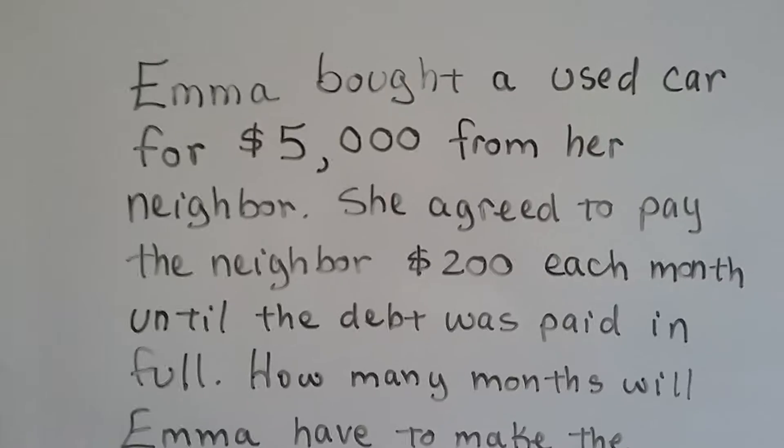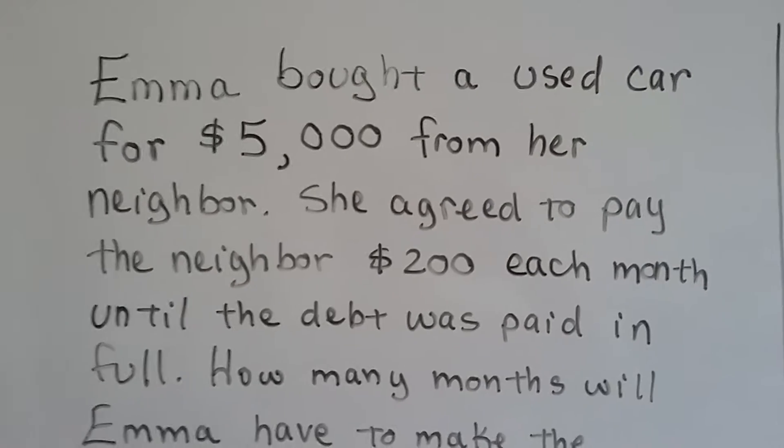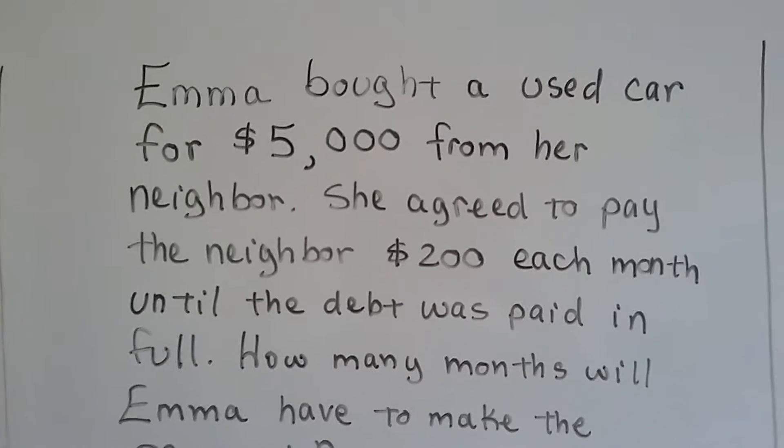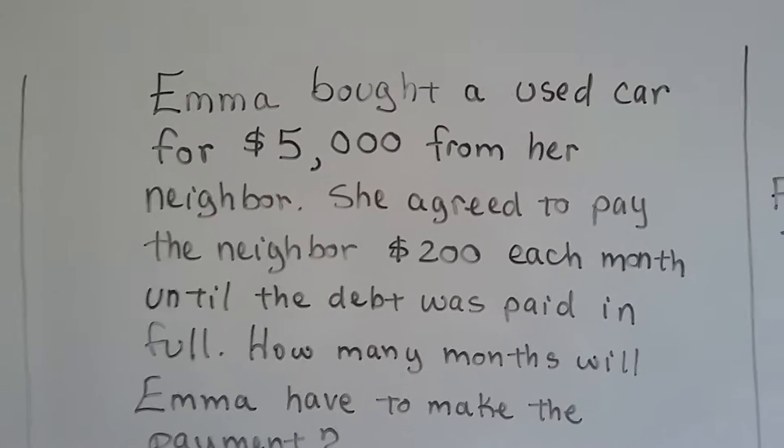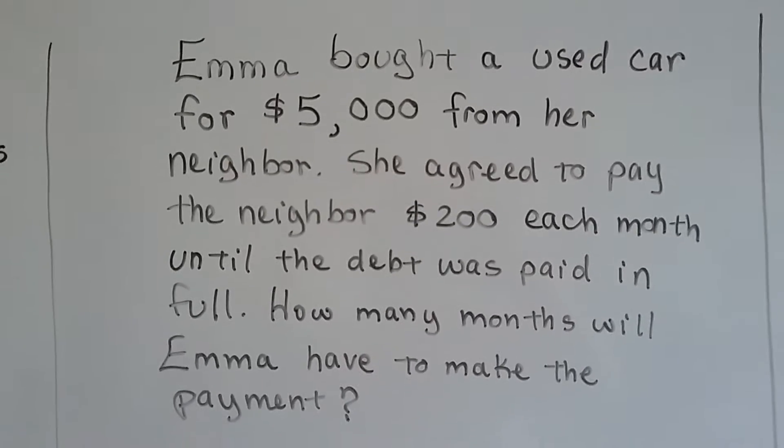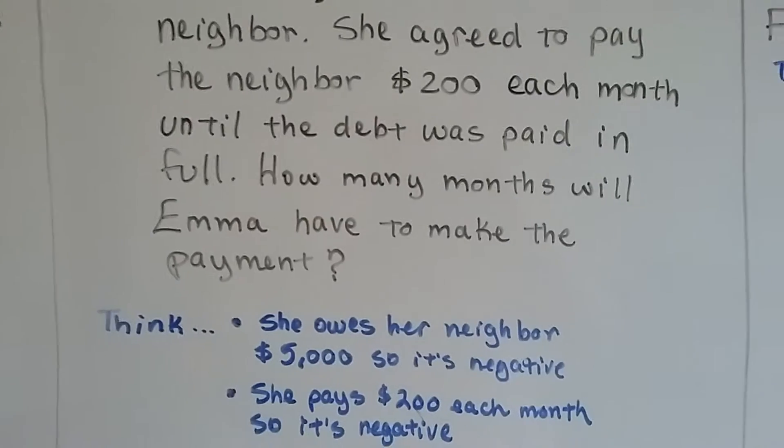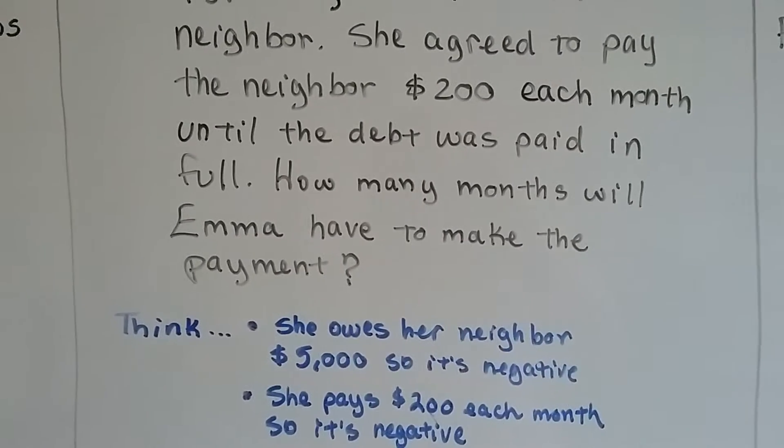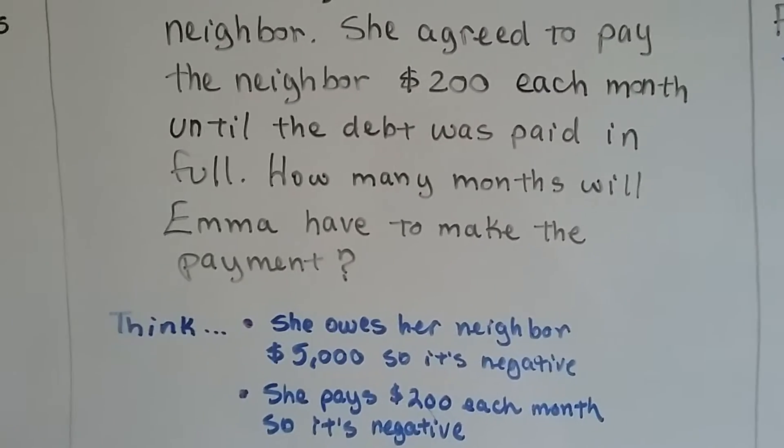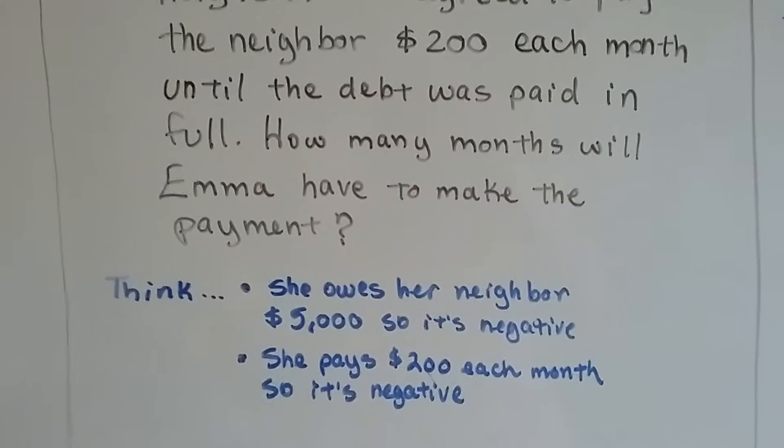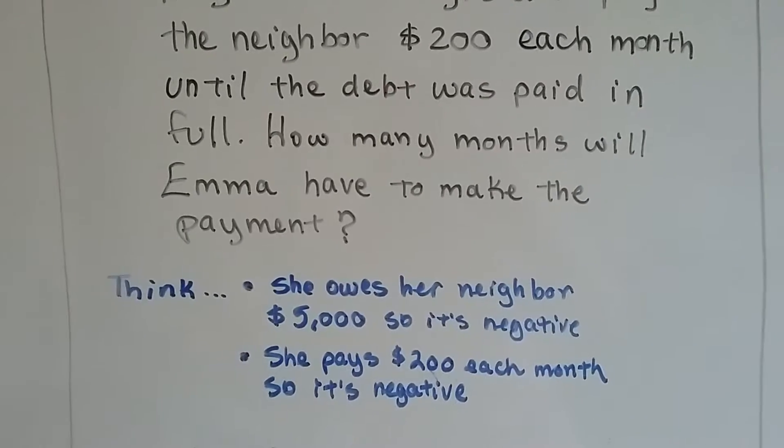Emma bought a used car for $5,000 from her neighbor. She agreed to pay the neighbor $200 each month until the debt was paid in full. So how many months will Emma have to make the payment? Think: she owes her neighbor $5,000, so that's a negative. She's in debt $5,000, and she pays $200 each month, so that's a negative out of her account.